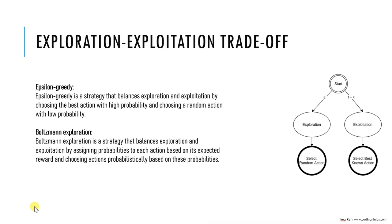In Boltzmann exploration, the strategy works by assigning a probability to each action based on its expected reward, then choosing actions probabilistically based on these probabilities. A temperature parameter controls the degree of exploration versus exploitation, with a higher temperature leading to more exploration.